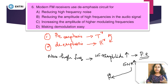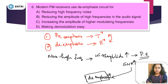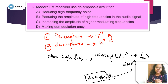At the receiver side, de-emphasis de-amplifies — it attenuates and reduces the high frequency amplitude. This is the reverse process at the receiver end. Pre-emphasis uses a high pass filter at the transmitter end in FM.